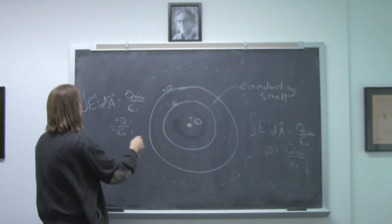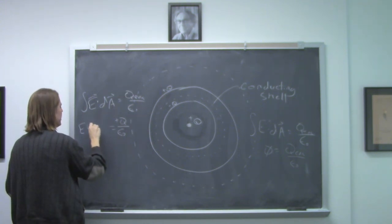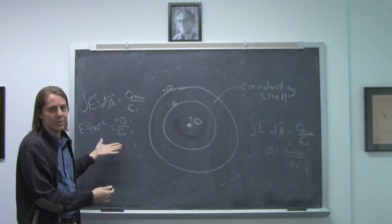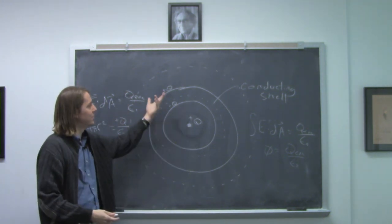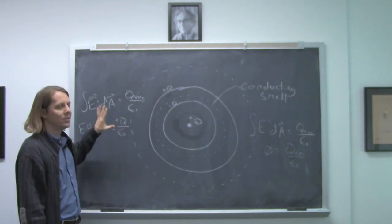And if we do all of our symmetry, then it becomes E times the area of the circle, 4 pi r squared. And basically, outside it looks like Coulomb's law for the point charge. As though the metal did nothing. As though the metal weren't even there. So the field does get outside.